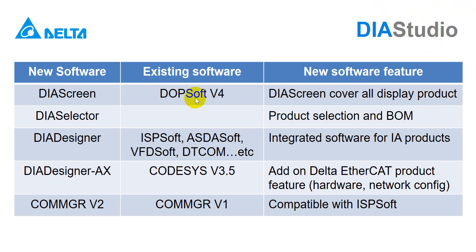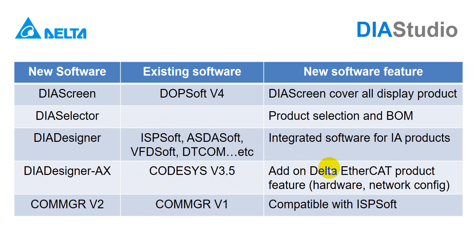For display products, for example HMI, in the past we always used DOP version 4, but now we can use DIA Screen. DIA Selector is new — in the past we didn't have equipment selection software, but now you can use it for Delta industrial automation product selection and generate a BOM. DIA Designer is an integrated software like ISP SOP, ASTA SOP, VFD SOP, DDCOM, etc., covering most IA products. DIA Designer AX is similar to Corti's version 3.5 but adds Delta EtherCAT product features like hardware and network configuration.